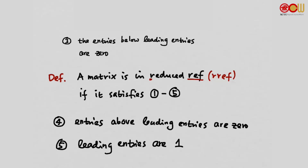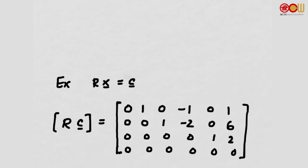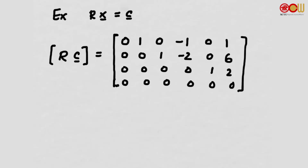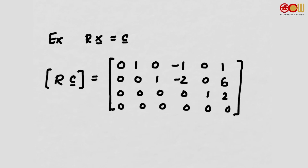With Gaussian elimination we can convert any matrix to its RREF. But why is reduced row echelon form useful? Suppose we have a system of linear equations Rx = c, where the augmented matrix Rc is this matrix — the same one we saw earlier. Let's write down the corresponding system. This is a system of five variables: x1, x2, x3, x4, and x5.